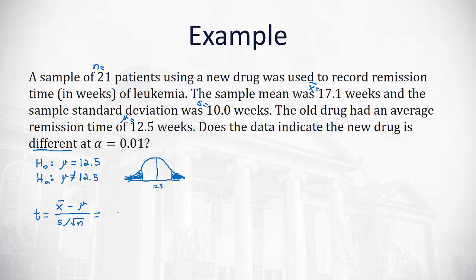So in our case x bar, our sample mean of these 21 patients is 17.1 weeks, minus the 12.5, divided by the standard deviation of 10, over the square root of the sample size of 21. When we do that on our calculator, we end up with a t value of 2.11.